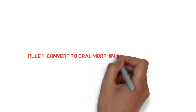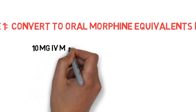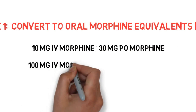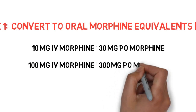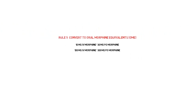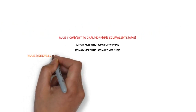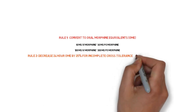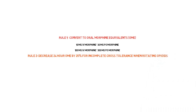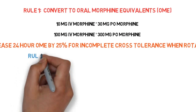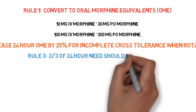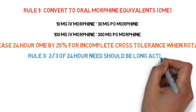Starting with rule one, we convert the IV morphine to OME. Since 10 mg of IV morphine equals 30 mg of oral morphine, 100 mg of IV morphine equals 300 mg of oral morphine. For rule two, the adjustment for cross-tolerance is omitted in this circumstance as morphine will remain our opioid of choice. We then apply rule three to calculate the long-acting opioid dose, which is two-thirds of the 24-hour OME.